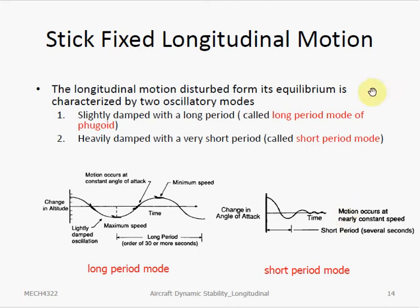The longitudinal motion disturbed from equilibrium flight can be characterized by two oscillatory modes. There's a long period mode, or phugoid, and a short period mode.